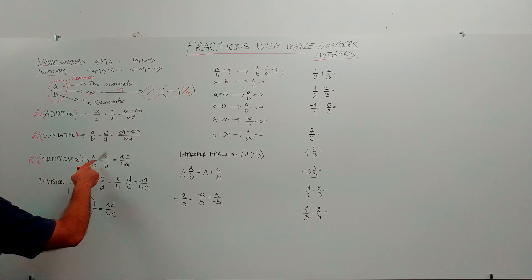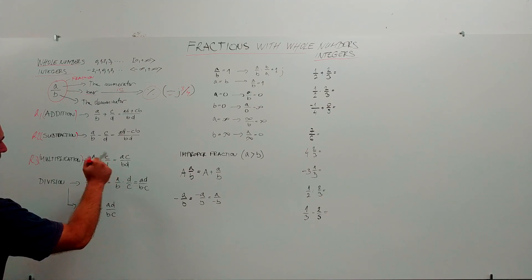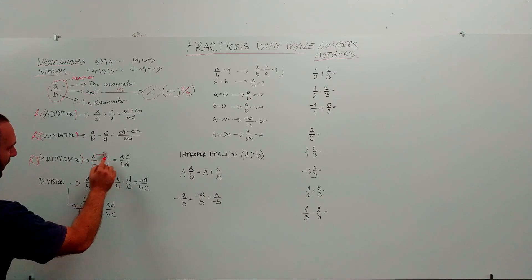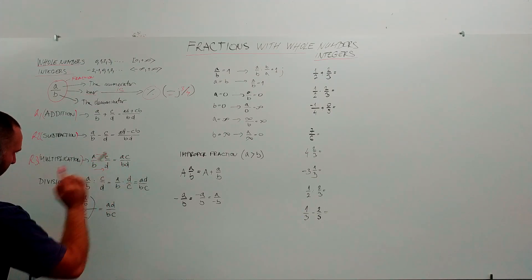Rule number three — Multiplication: A over B multiplied by C over D equals horizontal multiplication: A multiplied by C over B multiplied by D.